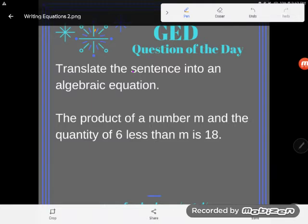Let's try it again. The product of a number m and the quantity of six less than m is 18. Okay, I got it now. If you feel confused by that wording, well no wonder, even the math teacher was confused for a second and I wrote the problem. So let's figure this out.